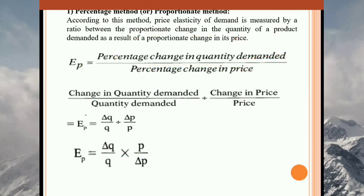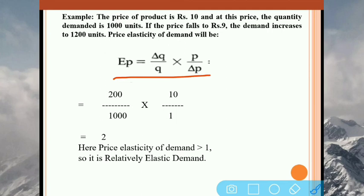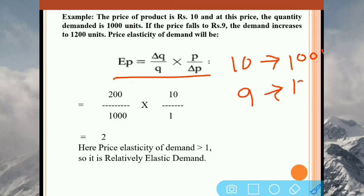We can explain this with the help of a hypothetical example. The price of the product is rupees 10, and at this price the quantity demanded is 1000 units. If the price falls to rupees 9, then the demand increases to 1200 units. So what will be the price elasticity of demand? We apply the formula: delta Q upon Q into P upon delta P. When price was 10, demand was 1000 units. When price fell to 9, demand increased to 1200 units.